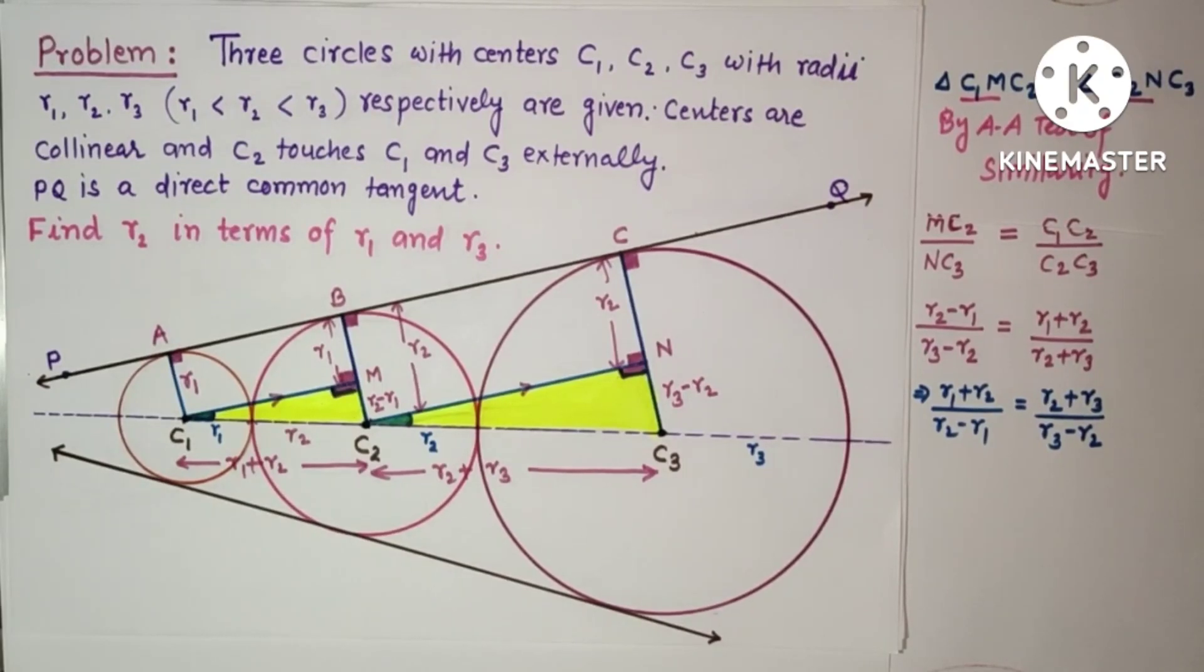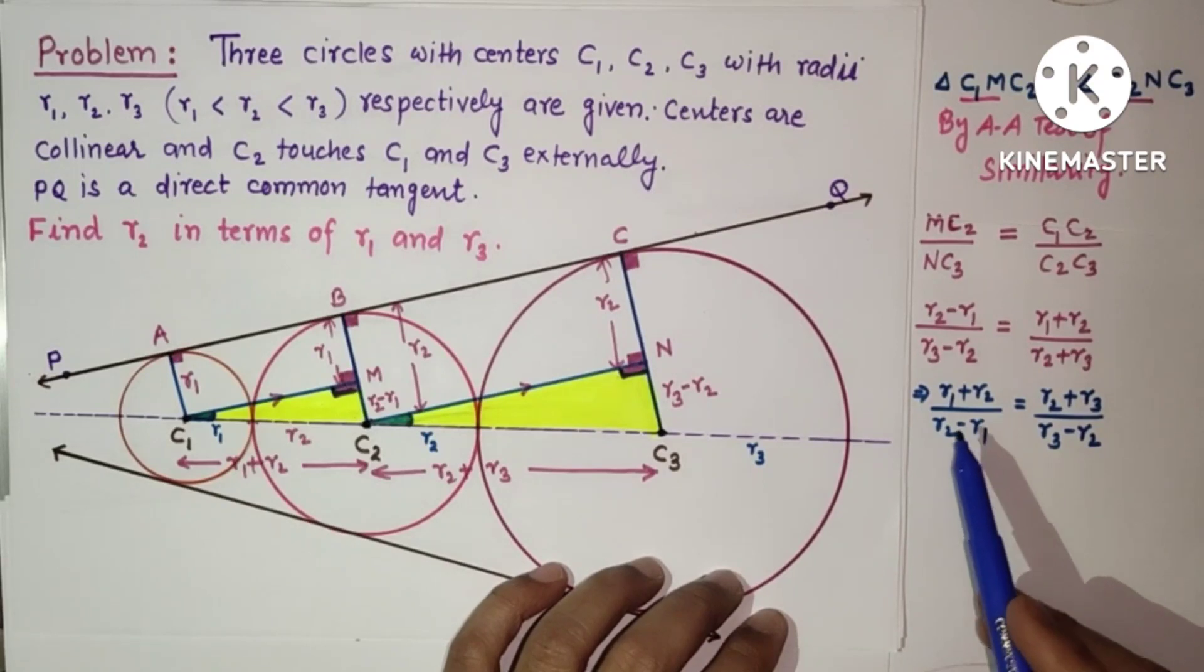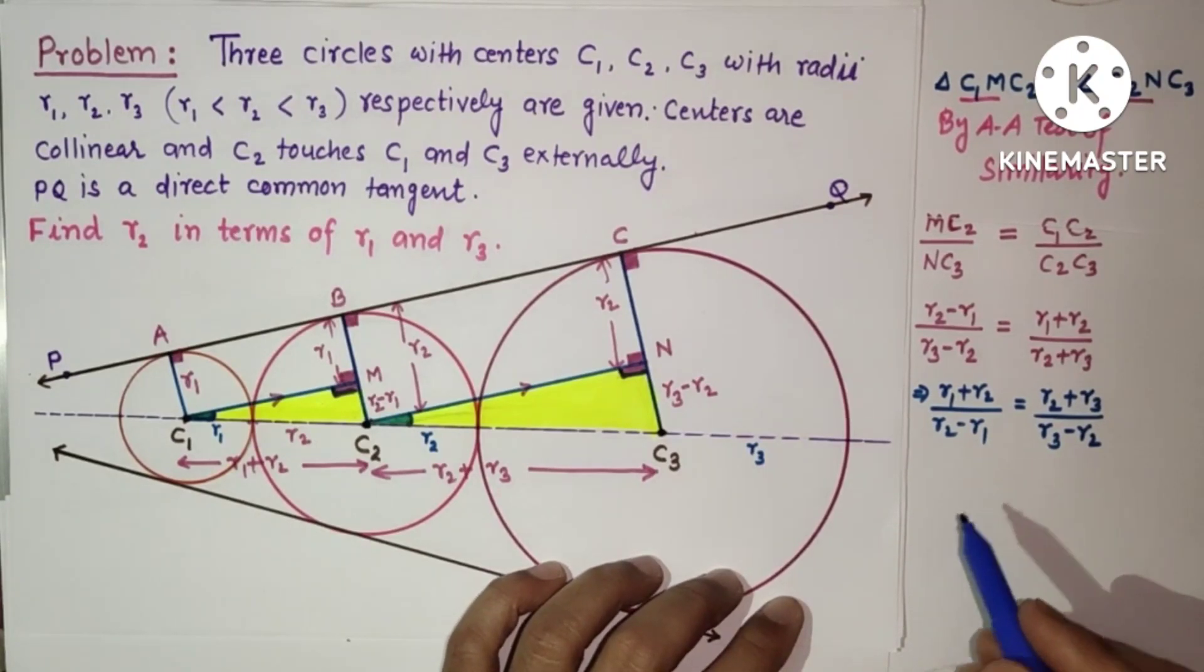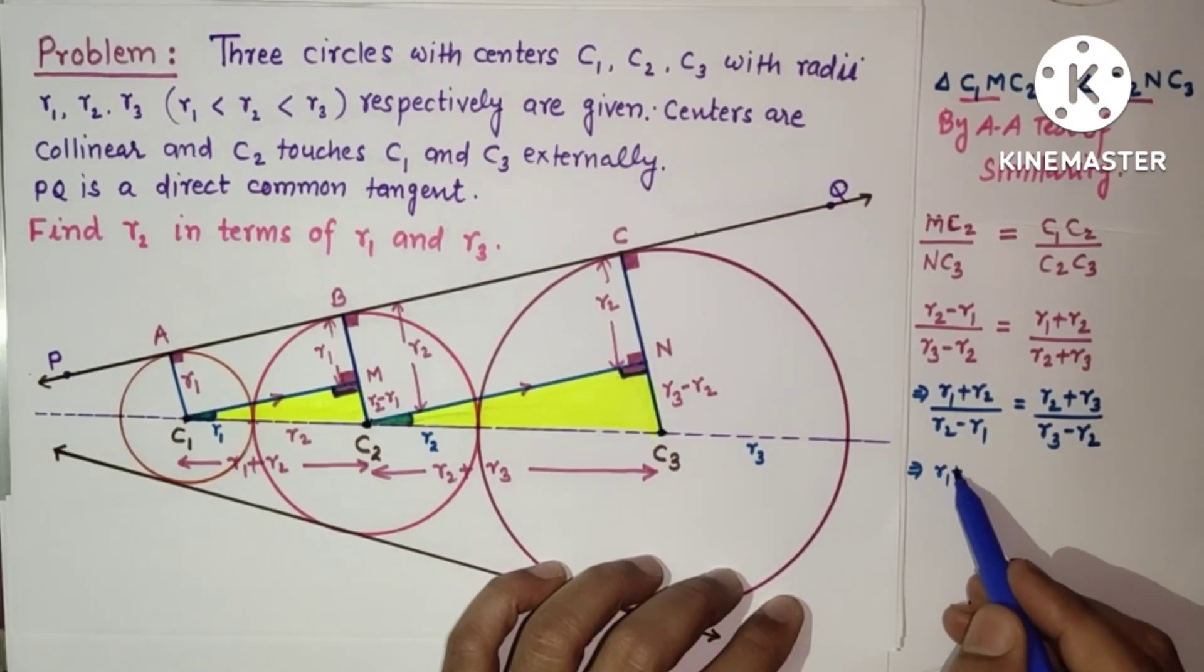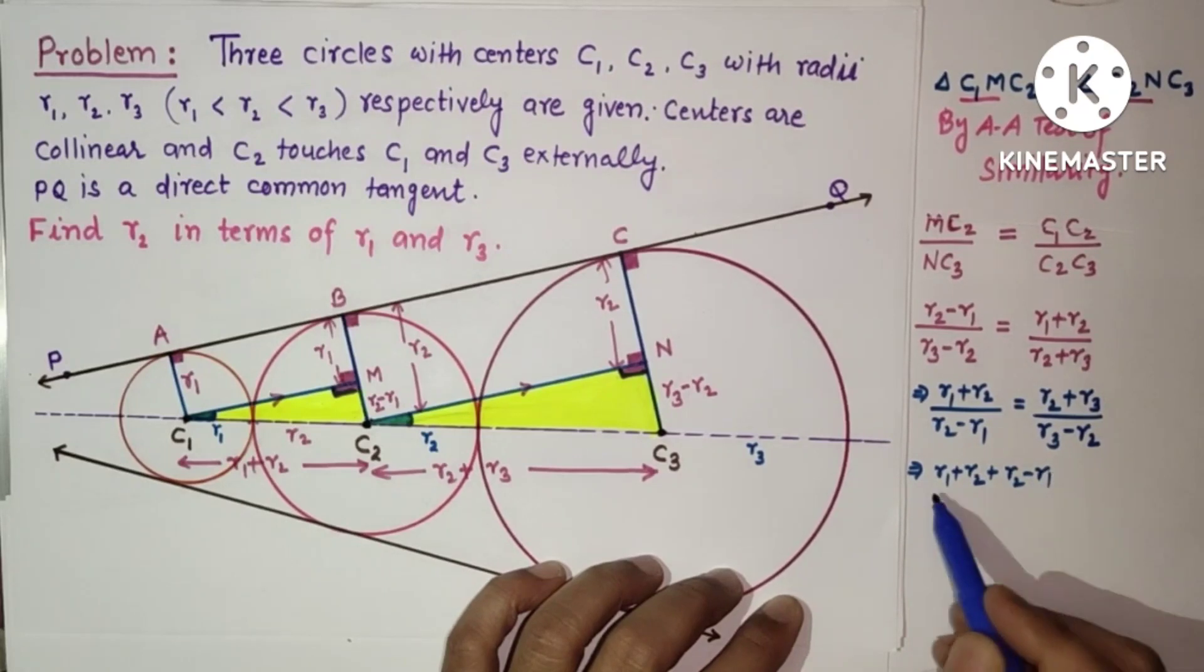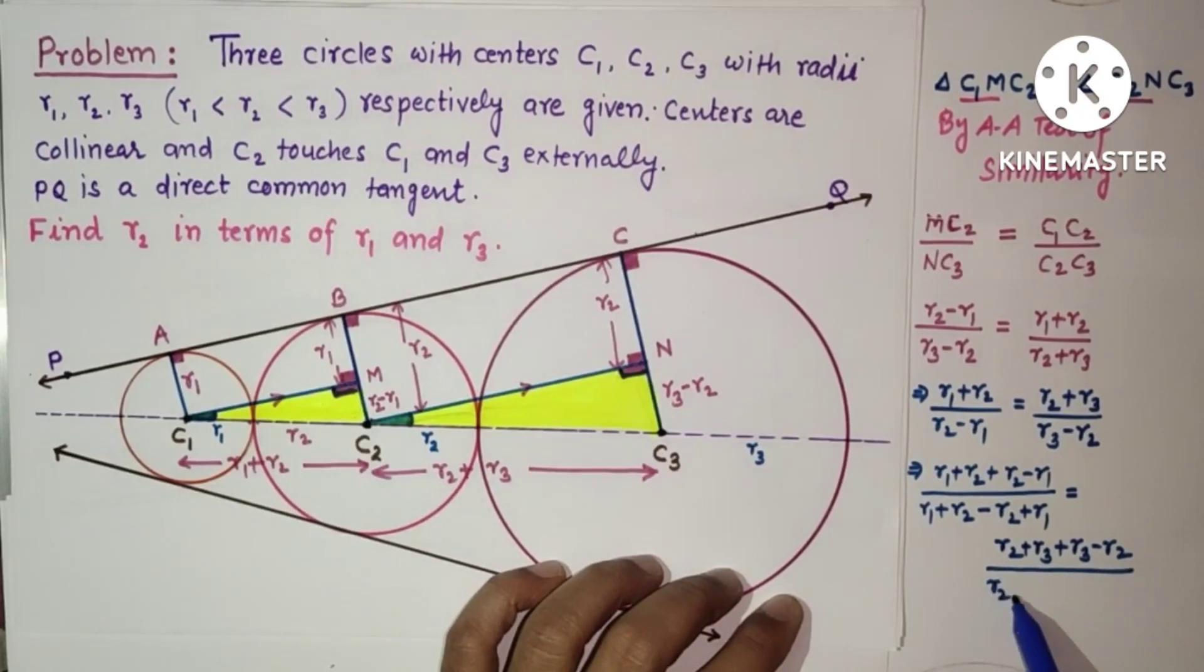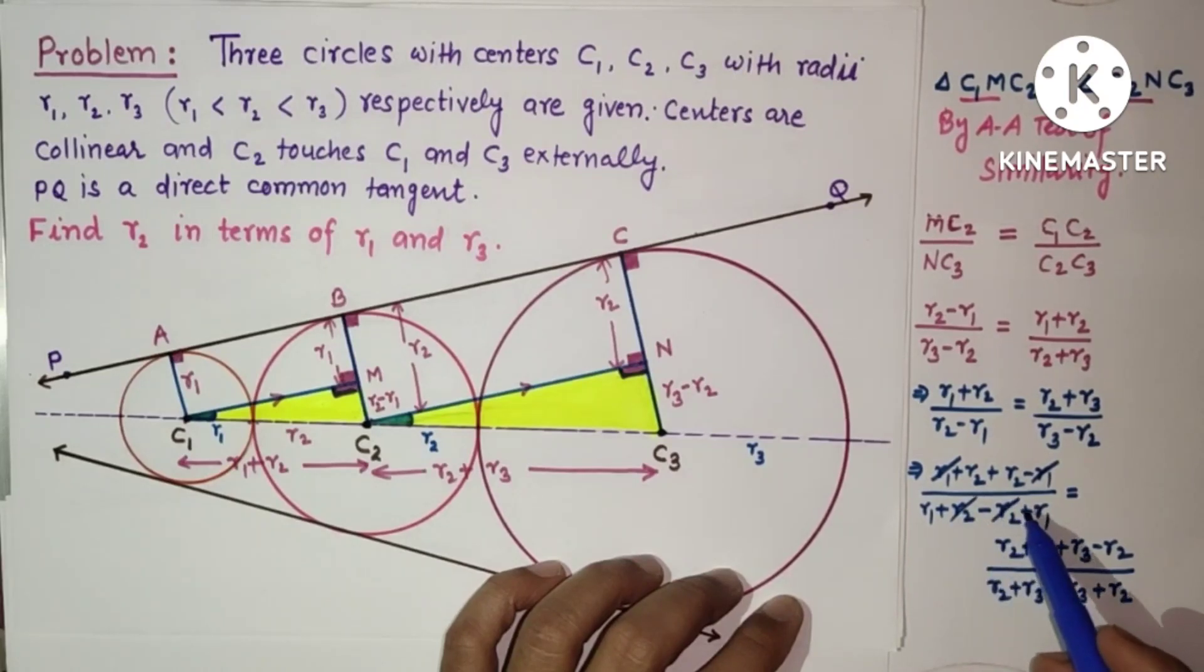If we use Componendo and Dividendo - numerator plus denominator upon numerator minus denominator equals numerator plus denominator upon numerator minus denominator - then we will get R1 plus R2 plus R2 minus R1 upon R1 plus R2 minus R2 plus R1, equals R2 plus R3 plus R3 minus R2 upon R2 plus R3 minus R3 plus R2. R1 and R1 will get cut, in this case minus R2 and R2 will get cancelled, and R3 and R3 cancels.